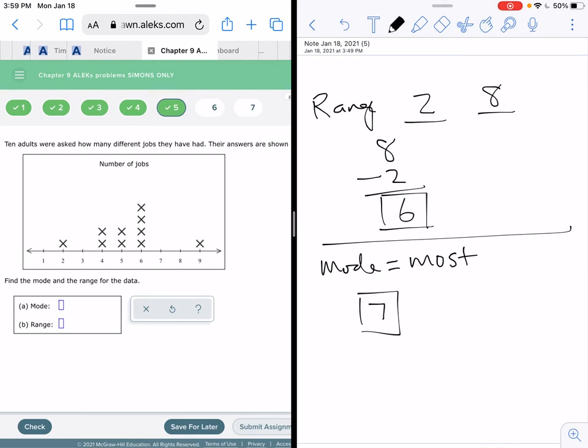Two adults have had four jobs. Two adults have had five jobs. Four adults have had six jobs. And one poor adult has had nine different jobs.